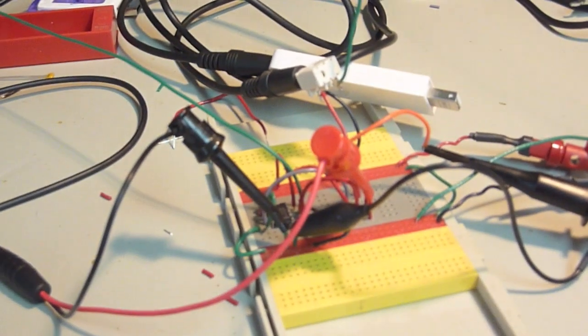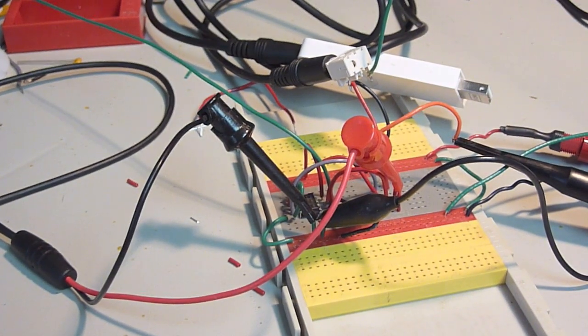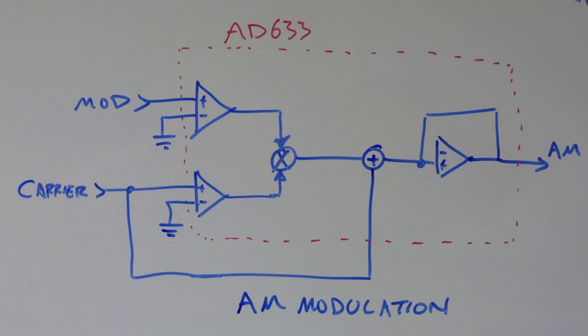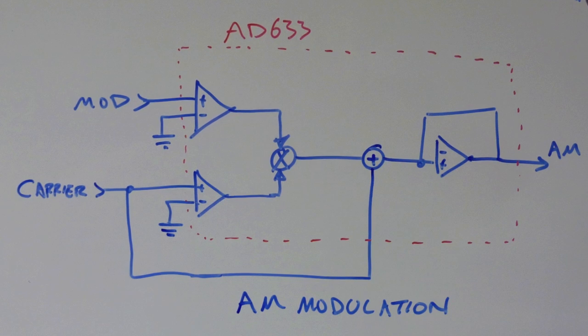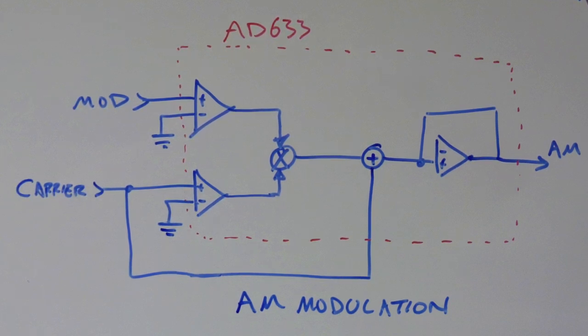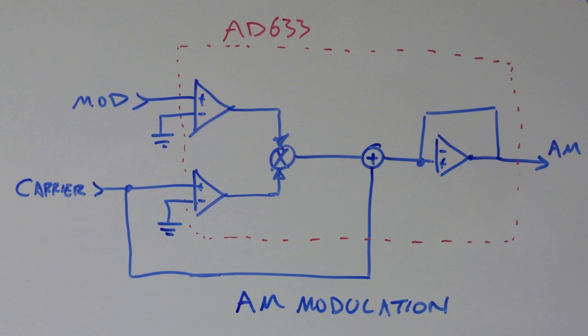And so that's it. I'll show the schematic and how it works here in a second. Okay, so here's the circuit basically. The AD633 has got a multiplier and an adder.